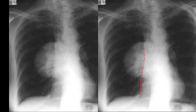Another posterior mediastinal mass showing the hilum overlay sign, with a nice demonstration of vessels in the hilum. The right heart border is completely separate from this mass lesion, telling us that it is not anterior, not middle, and therefore must be a posterior mediastinal mass. This was a schwannoma.